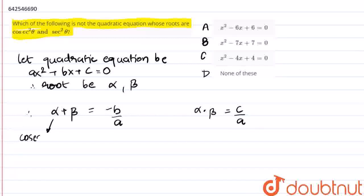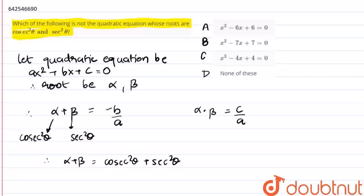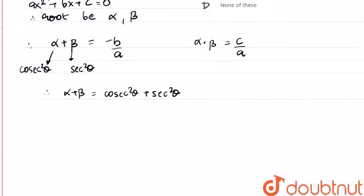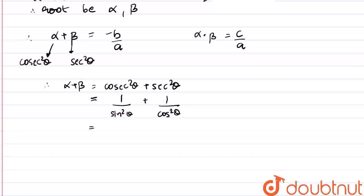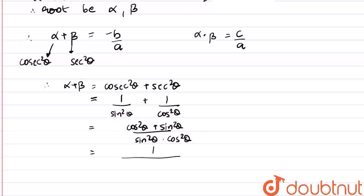Now as the roots of the equation are given as cosec²θ and sec²θ respectively, α + β = cosec²θ + sec²θ. Now cosec²θ can also be written as 1/sin²θ, and sec²θ can also be written as 1/cos²θ. Now adding both terms, we get (cos²θ + sin²θ) / (sin²θ · cos²θ).